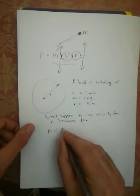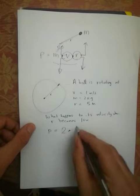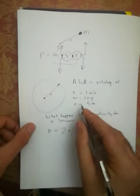So the mass is equal to 2 times its velocity, which is 1, times the radius, which is 5.